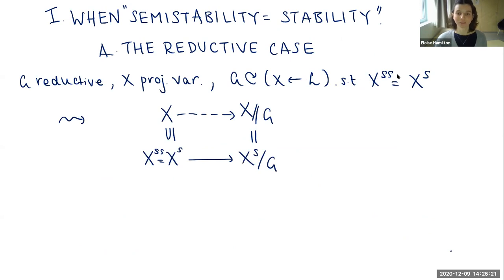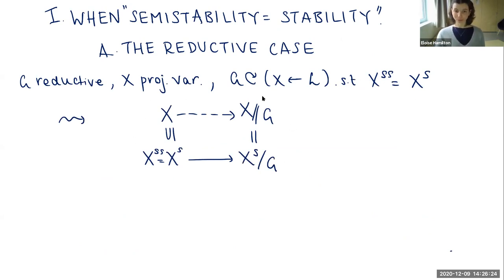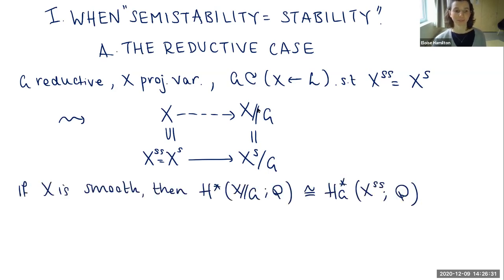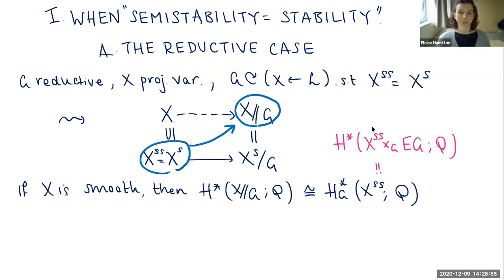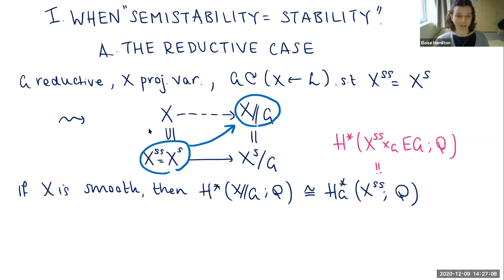The data I start with is a reductive group G and a projective variety X, with G acting linearly on X, and I assume the semi-stable locus coincides with the stable locus. In this nicest possible case, the projective GIT quotient is also an orbit space. If X is smooth, then the rational cohomology of the quotient will be isomorphic to the G-equivariant rational cohomology of the semi-stable locus. The equivariant cohomology is defined using EG, the universal classifying bundle for G. To work out the rational cohomology of the quotient, it's enough to compute the equivariant cohomology of the semi-stable locus.